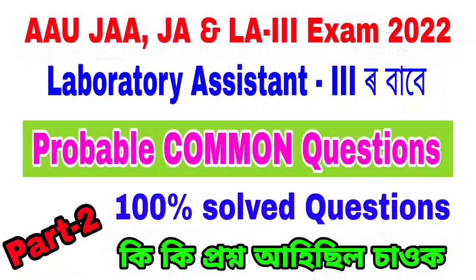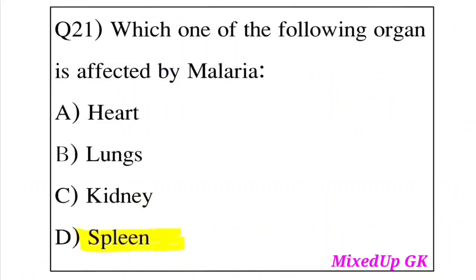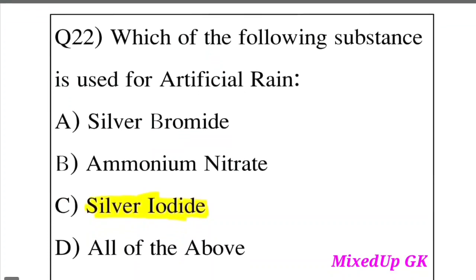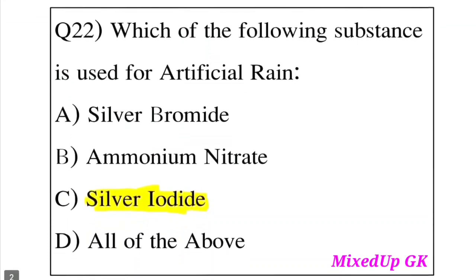Question 21: Which one of the following organs is affected by malaria? Option A: Heart. Option B: Lungs. Option C: Kidney. Option D: Spleen. The answer is Option D, Spleen.